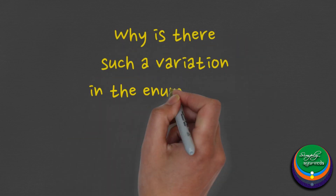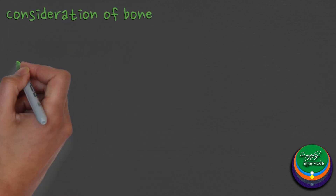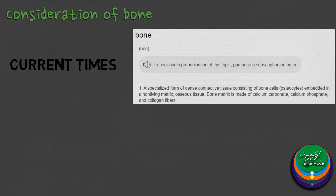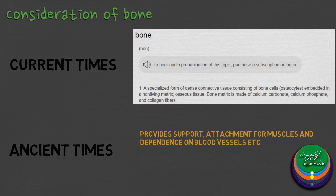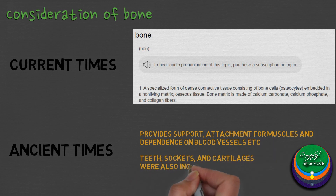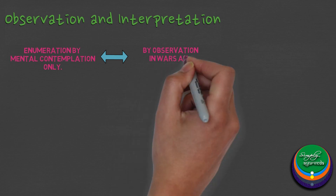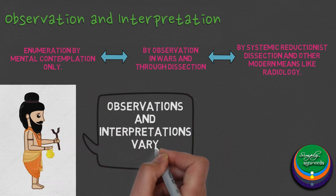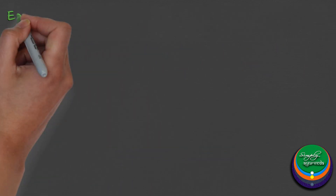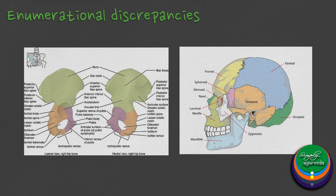So why is there such a variation in the enumeration of bones in the human body? In the current times, bones are limited to their structure. But anything that provides support, attachment for muscles, and dependence on blood vessels were considered bones in ancient times. Hence teeth, sockets and cartilages were also included in this enumeration. Variations also occur due to explanations by mental contemplation only or through limited practical exposure, and also from considering more than one bone as a single bone, or parts of one bone as different bones.